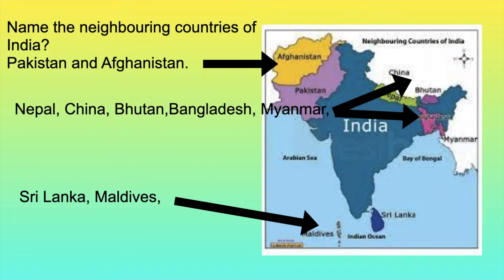Name the neighboring countries of India. On the west and north: Pakistan and Afghanistan. Toward the east and north: China on top, Nepal, Bhutan to the right of Nepal, Bangladesh below it, Myanmar on the right, and on the bottom Sri Lanka and the Maldives.